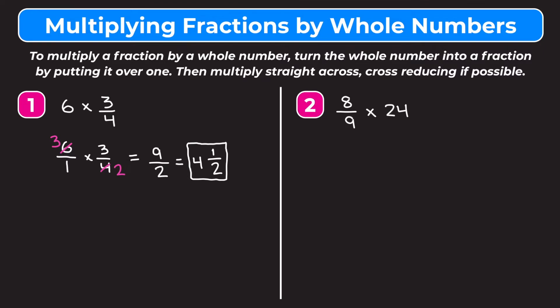Let's look at number two. The fraction and the whole number are flipped, but we use the same concept. We have eight-ninths times 24. We start by making 24 into a fraction by putting it over one — so 24 is the same as 24 over one — giving us eight-ninths times 24 over one.